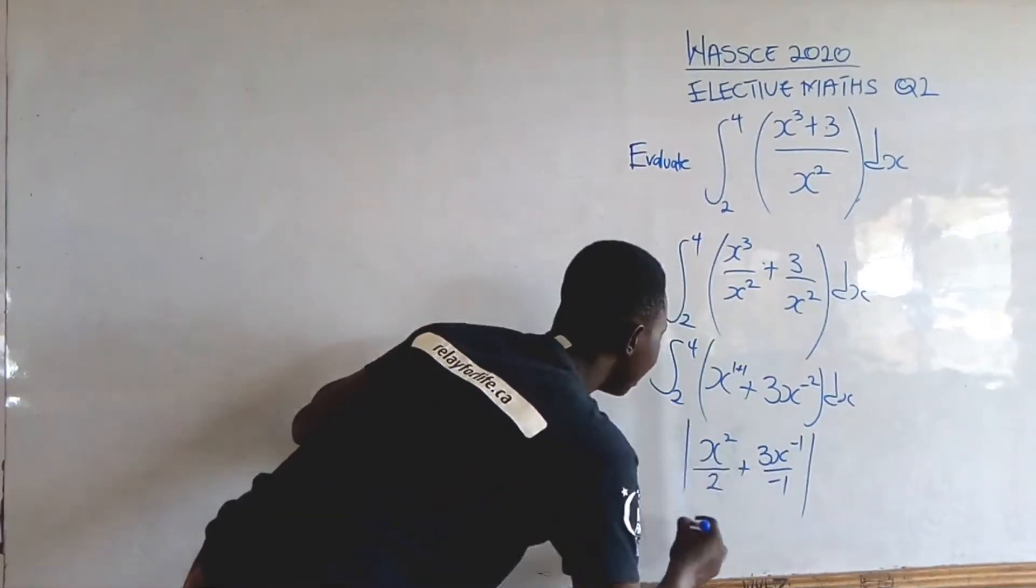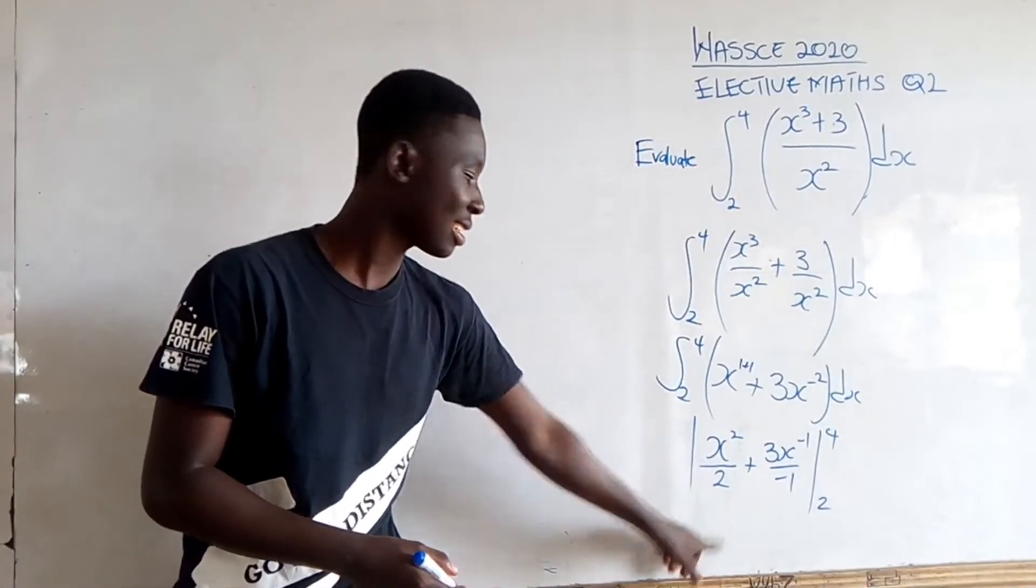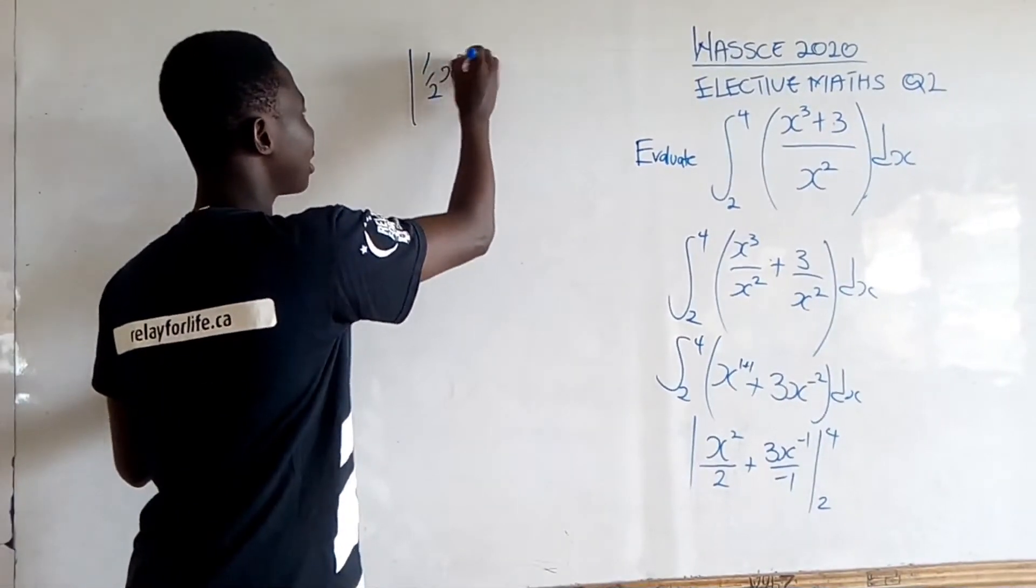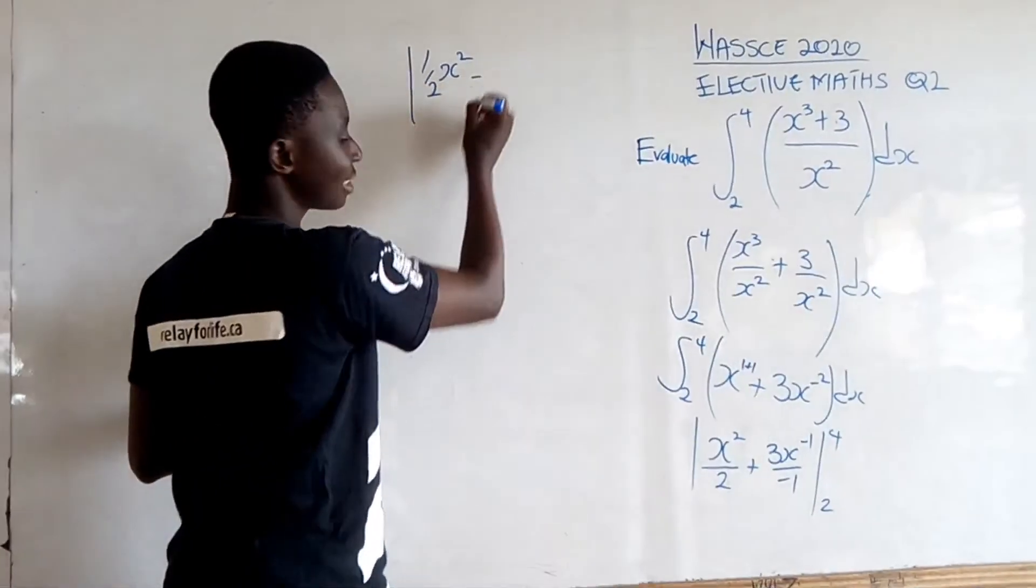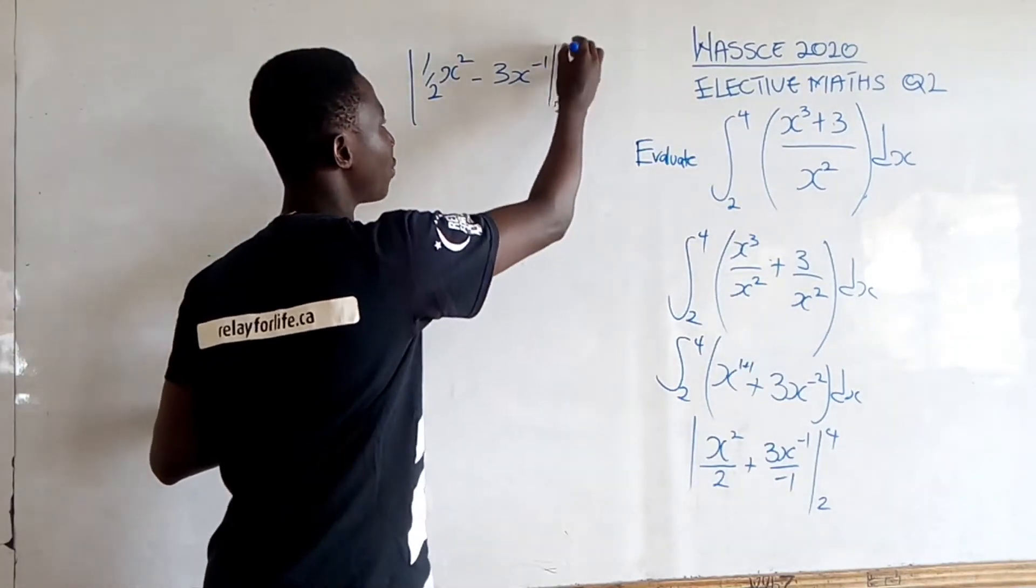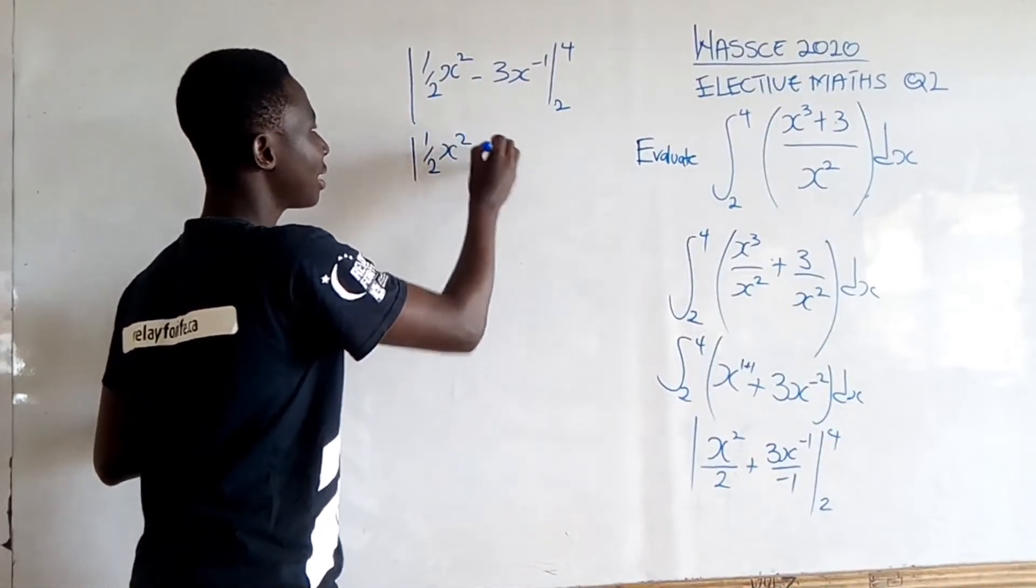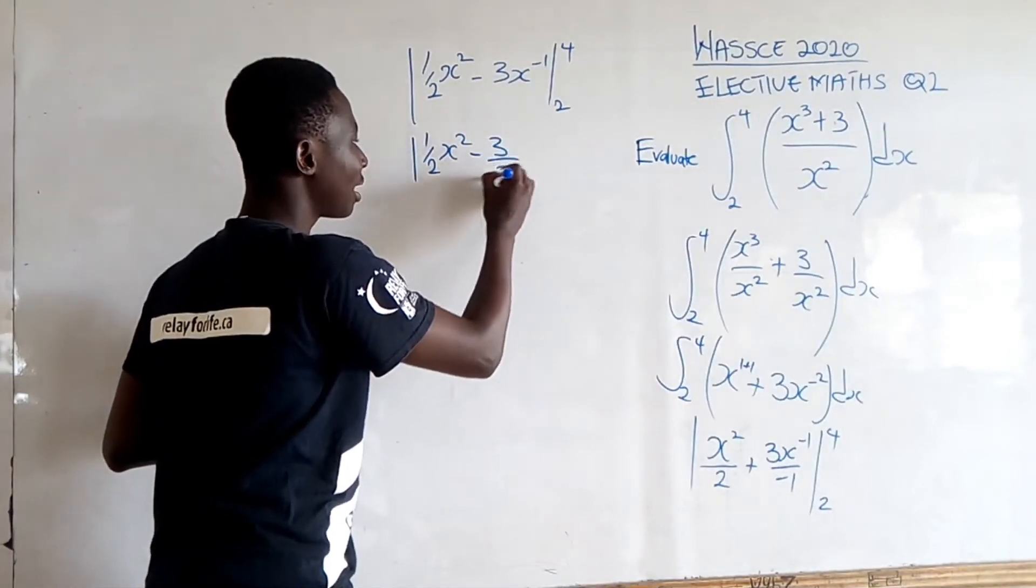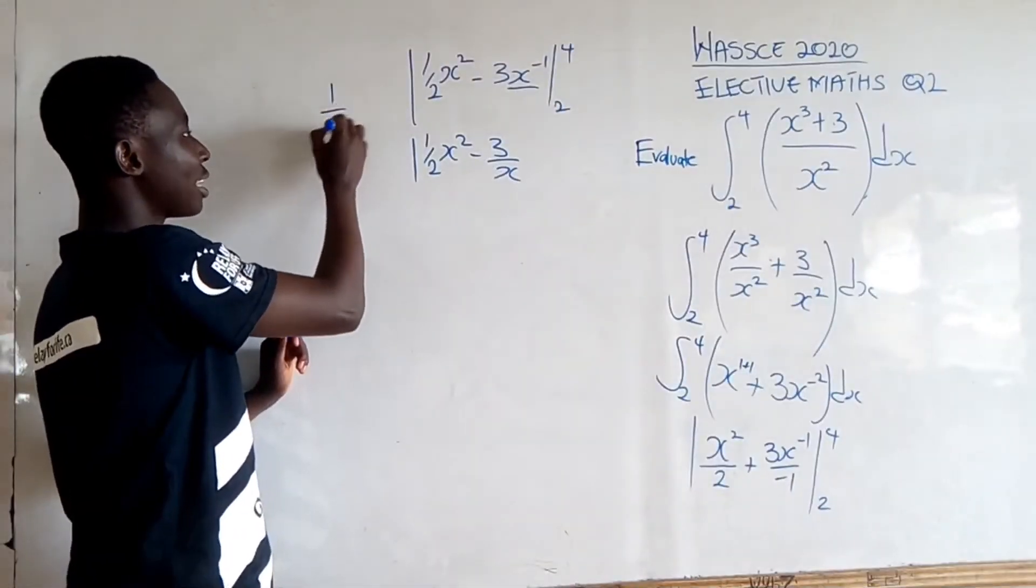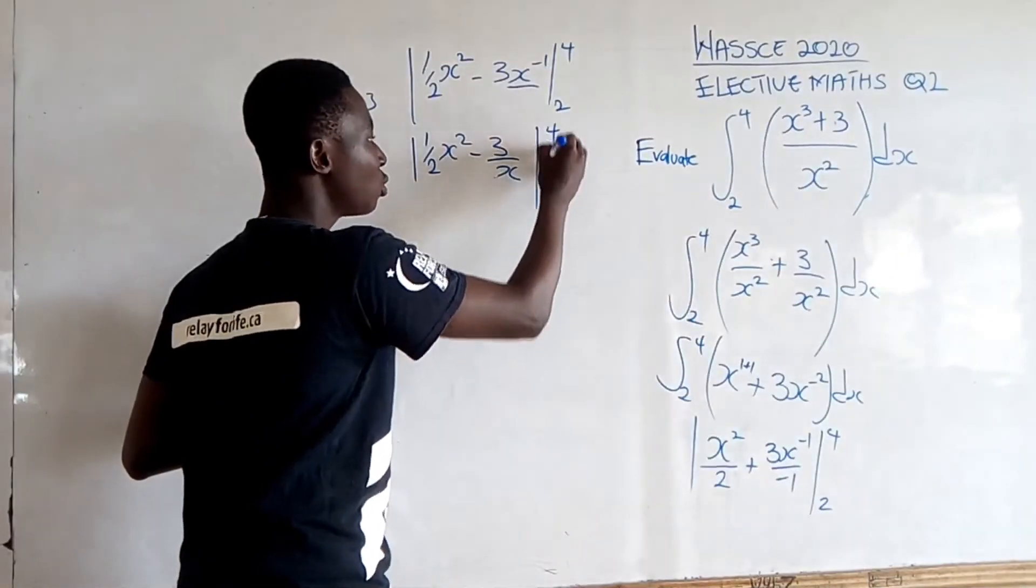And then evaluate from 2 to 4. Now, we can write this as (1/2)x² minus 3x^(-1) from 2 to 4. We can also write this as (1/2)x² minus 3/x, because x^(-1) can be written as 1/x, and multiplying by 3 gives us 3/x from 2 to 4.